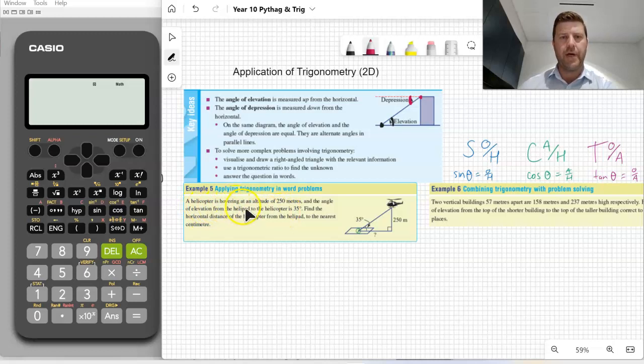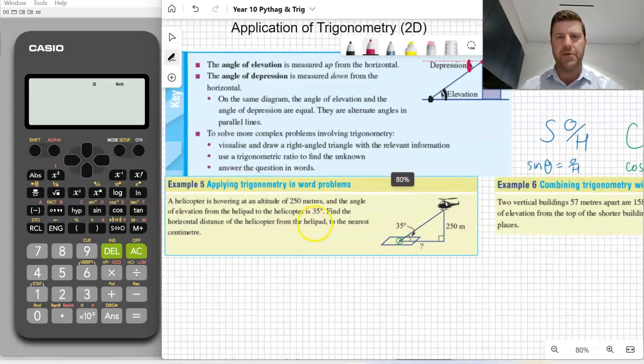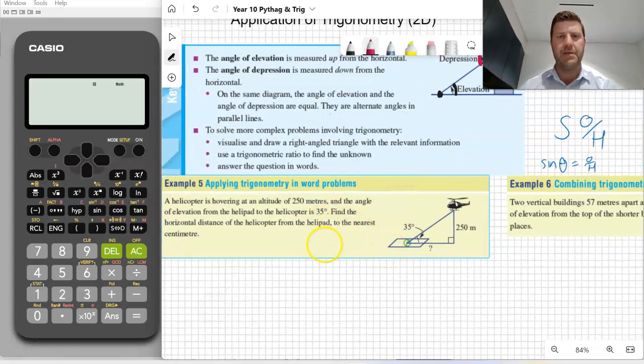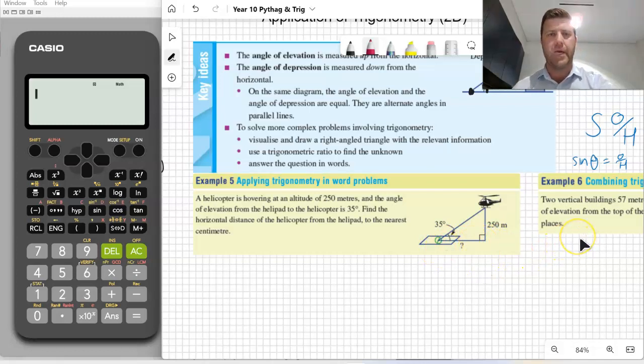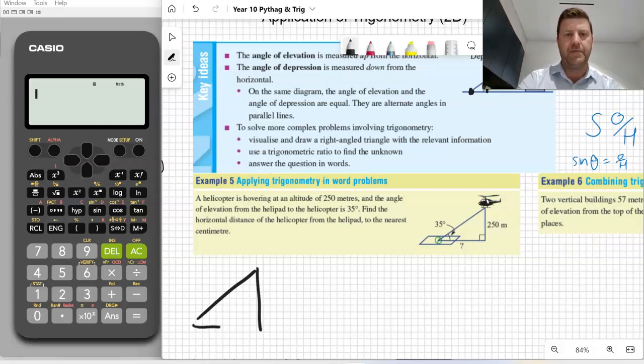It says here a helicopter is hovering at an altitude of 250 meters and the angle of elevation from the helipad to the helicopter is 35 degrees. Find the horizontal distance of the helicopter from the helipad to the nearest centimeter. So it's actually giving us a diagram and telling us actually what side we need to work out. It's actually pretty easy. Start by drawing your right angle triangle and following the steps from previous videos.